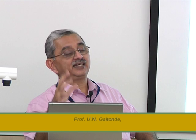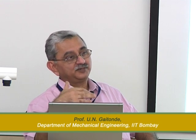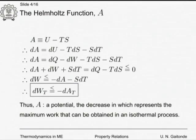This means A, the Helmholtz function, is similar to a potential — the decrease in which represents the maximum work that can be obtained in an isothermal process. Compare this with a mass M in a gravitational field at height H1 reduced to H2: the decrease in potential energy H1 − H2 is the maximum work extractable. Similarly, A can be considered a potential — we can even call it the Helmholtz potential — the decrease in which gives maximum work in an isothermal process.